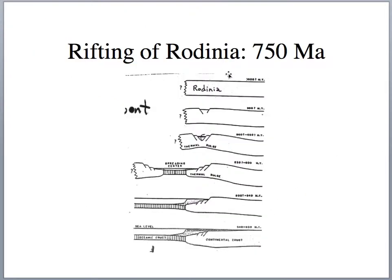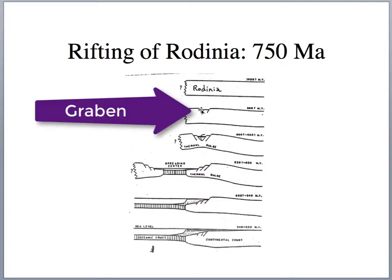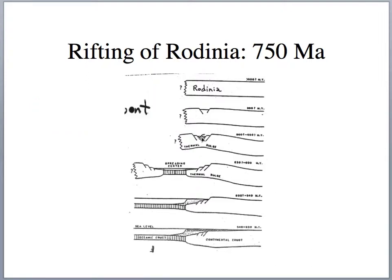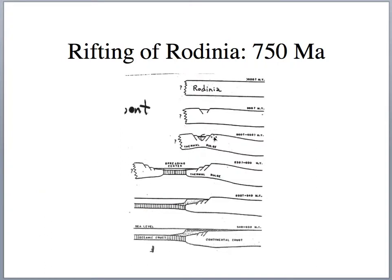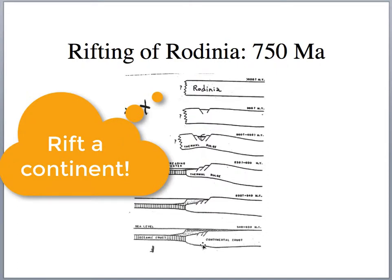We're going to see this rifting begin around 750 million years ago. The model here is that we have the continent, and then we start developing grabens, or normal faulting, resulting in rifting. We see volcanics, like Kilimanjaro and Mount Kenya in the East African Rift. We'll also collect a lot of rift sediment, a lot of basins, maybe some shallow sea will move in — shallow water carbonates, limestones and quartz sandstones developing on a passive trailing continental margin. There's only one way to develop a trailing continental passive margin, and that is to rift a continent.